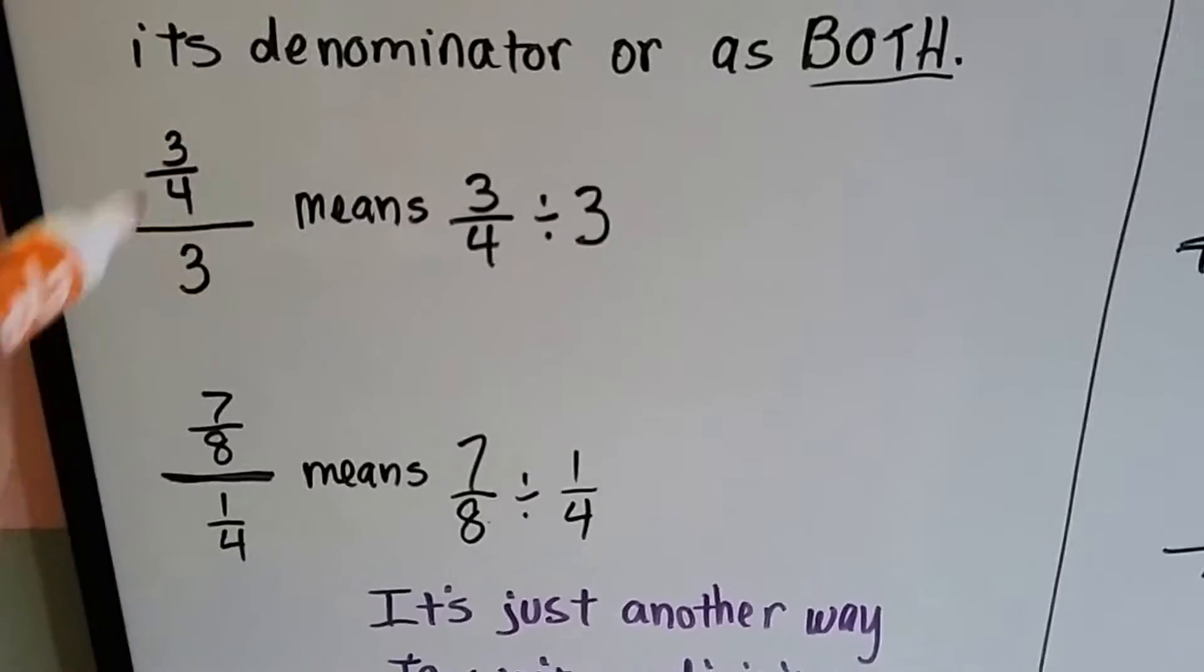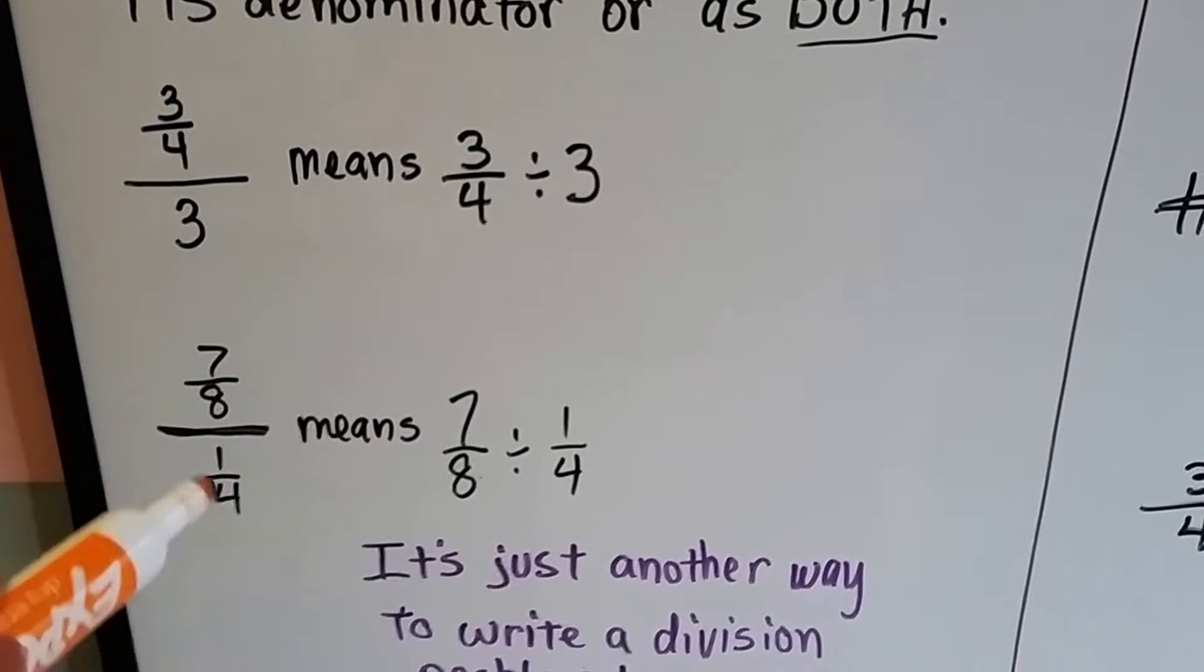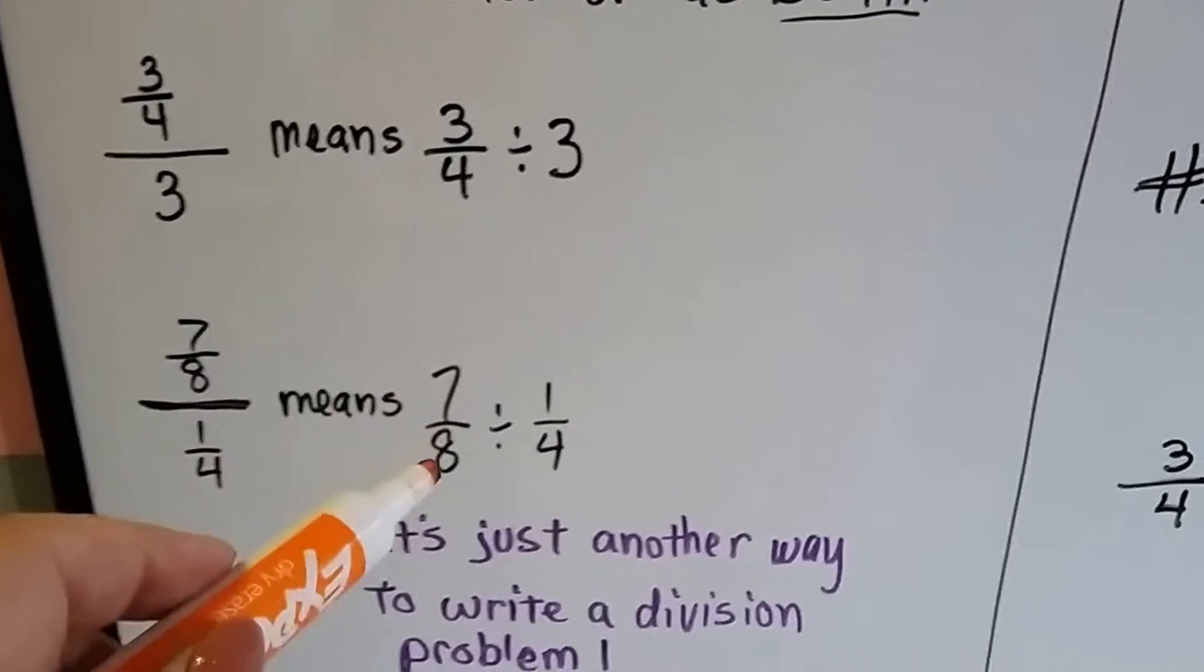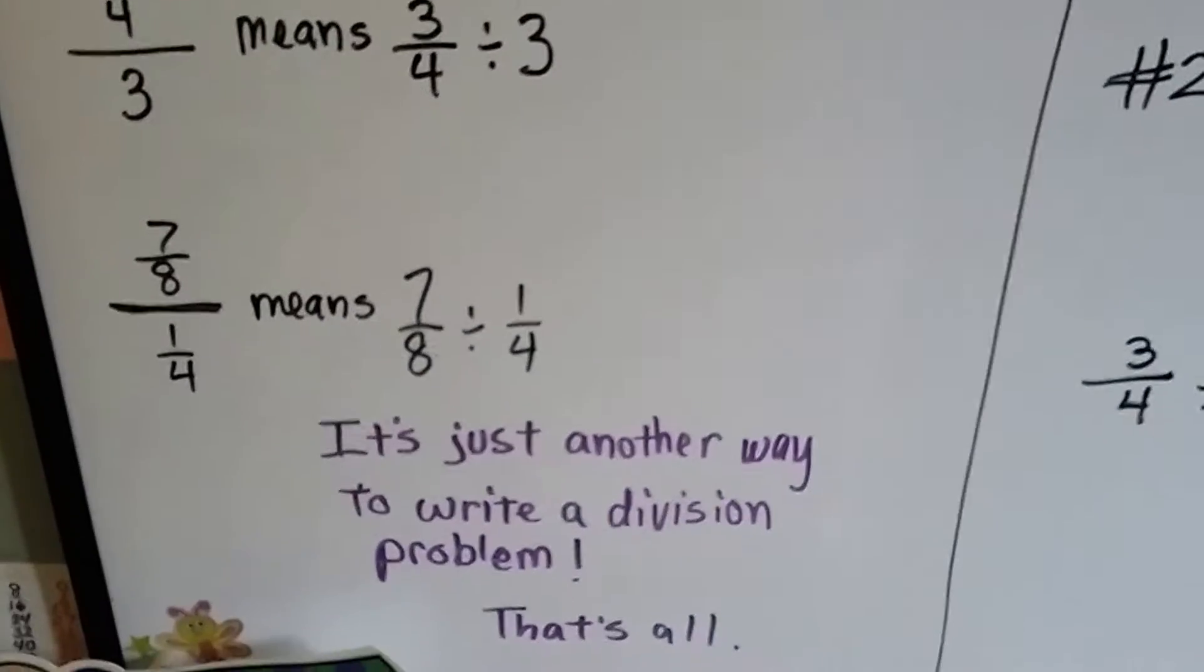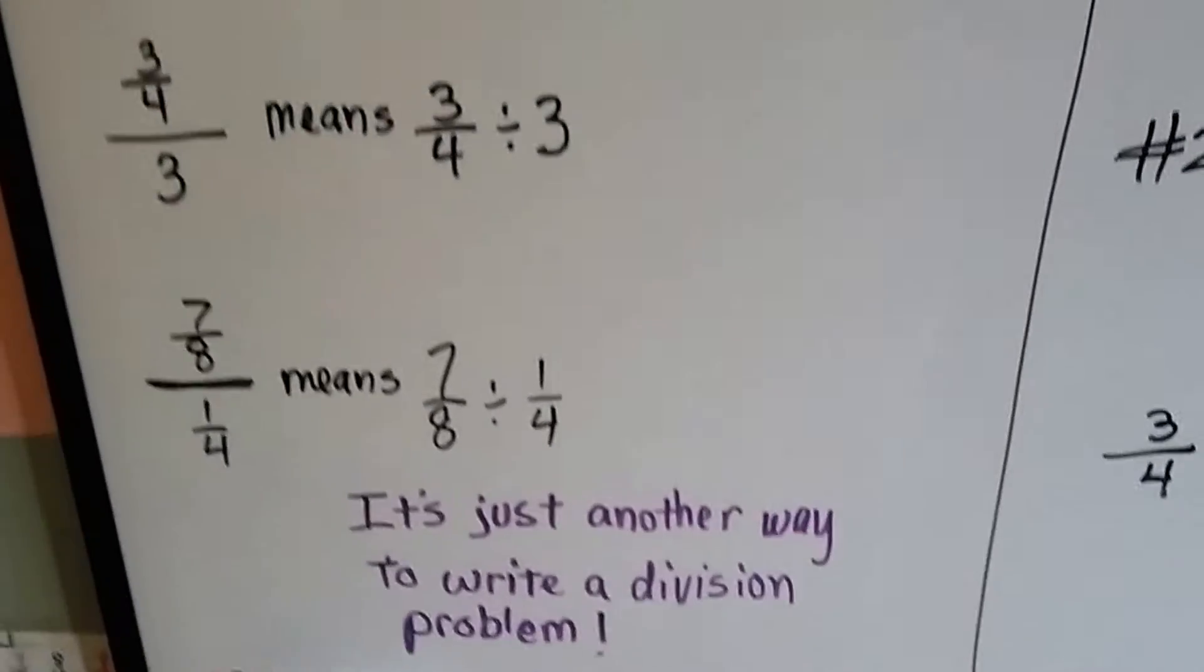And all it means is three-fourths divided by three. It's a little division problem. If we have seven-eighths and a fraction bar and a one-fourth, it just means seven-eighths divided by one-fourth. It's just another way to write a division problem. That's all. No big deal.